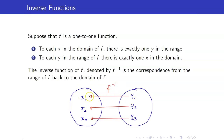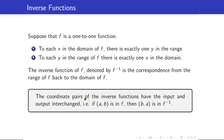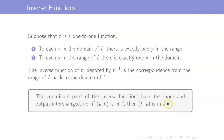Previously, for f, x1 goes to y1, x2 goes to y2, and x3 goes to y3. For f inverse, the direction just switched. Notice that the coordinate pairs of the inverse function have the input and output interchanged. That is, if (a, b) is in f, then if you interchange this, (b, a) would be in its inverse function.